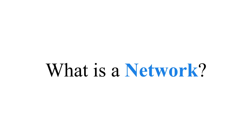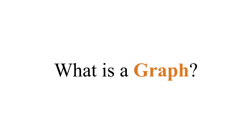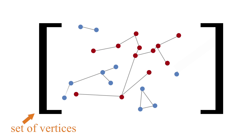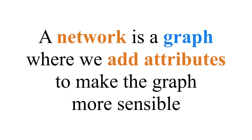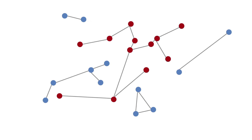First fundamental concept: what's a network? Or actually, even before that, what's a graph? Because a network is a special kind of graph. A graph is a set of vertices with lines between pairs of vertices. A network is a graph where we add attributes to make the graph more sensible. Graphs or networks have three major components we need to think about when we visualize them: the vertices or nodes, the lines, and the layout.